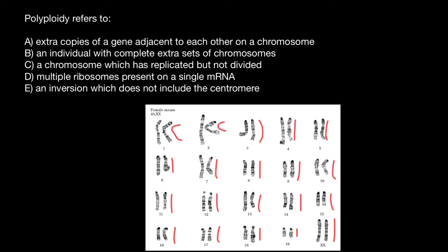So now we can choose an answer, and this is going to be answer B: an individual with complete extra sets of chromosomes. Some animals like fish can be triploid, and some plants can be triploid, tetraploid — meaning four sets of chromosomes — or pentaploid, meaning five sets of chromosomes.